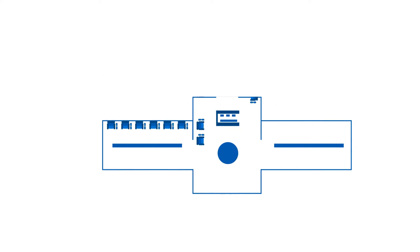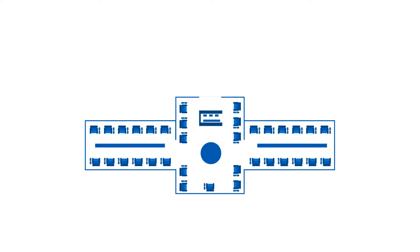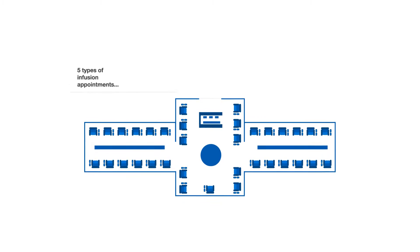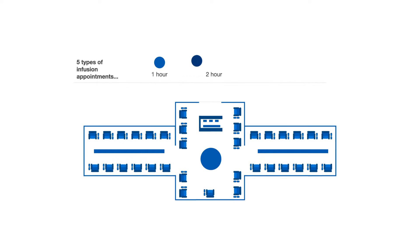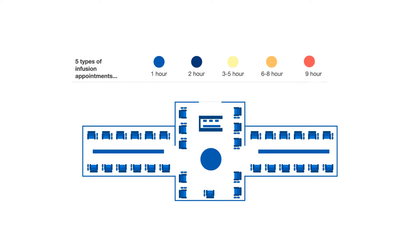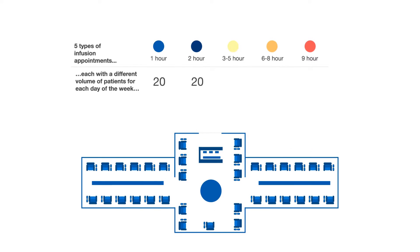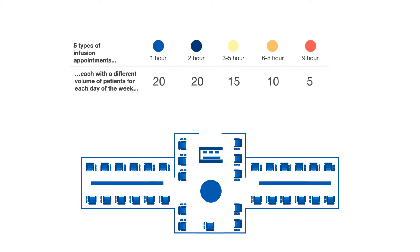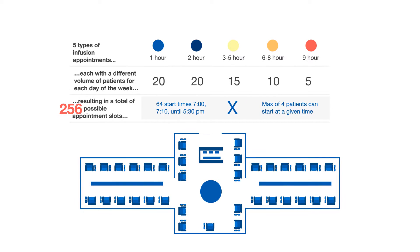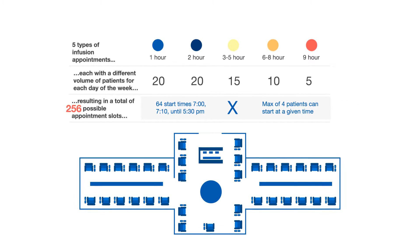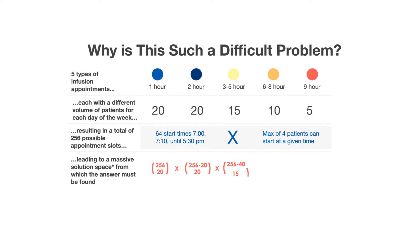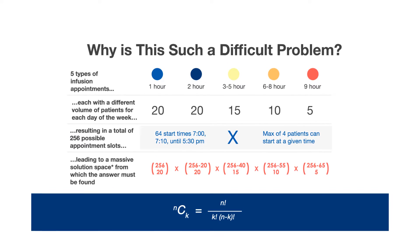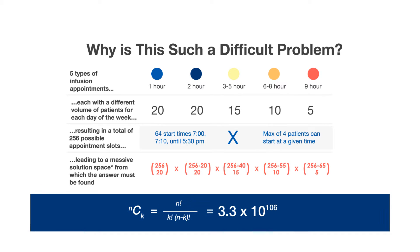Let's take a 35-chair infusion center that operates eight hours per day, treating five types of appointments: one hour, two hours, three to five hours, six to eight hours, or nine or more hours. Four sets of patients can start their treatment at 10-minute intervals. That's 256 possible start times or slots per day. What's the number of ways in which these patients can be started? A number with over 100 zeros behind it.